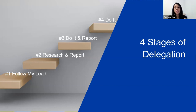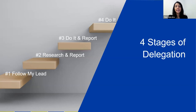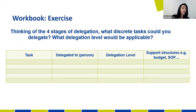Understanding the different stages of delegation and what level of autonomy and budget you are willing to give your employees to run with a task is important. You will become better delegators, which will ultimately help you achieve the goal of building a company that can thrive without you pulling all the shots or making all the rain. The workbook exercise has you thinking about the four levels of delegation, the discrete tasks you could delegate, and what delegation level would be applicable.